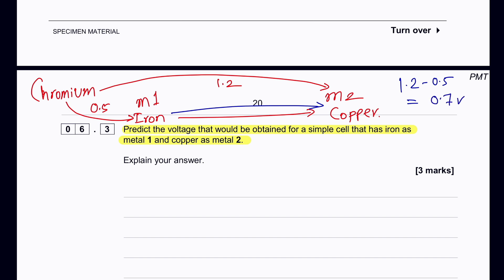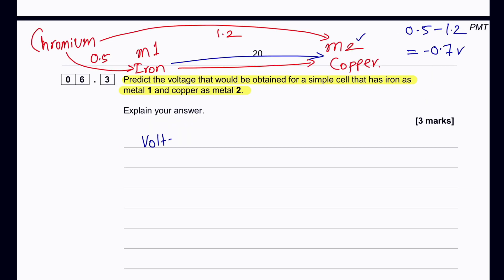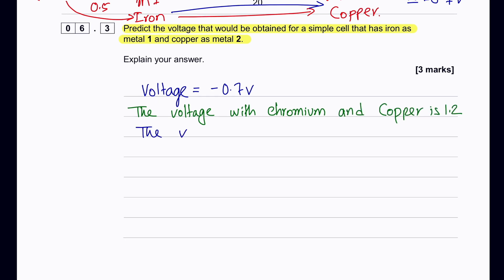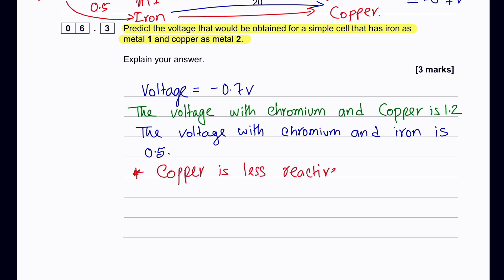Since copper (M2) is less reactive than iron, the voltage is negative, so our answer is −0.7 V. The comparison is: chromium–copper = 1.2 V, chromium–iron = 0.5 V; since copper is less reactive than iron, we do 0.5 − 1.2 = −0.7 V.